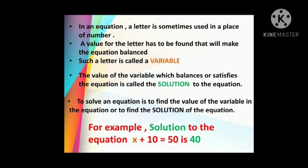Children, now what have we done over here? x is the variable we have taken in place of the unknown value. x plus 10 is 50. Now, what will give us 50? Yes, 40 when added to 10 will give us 50. So, 40 is the solution of our equation. This is how we balance and solve an equation.